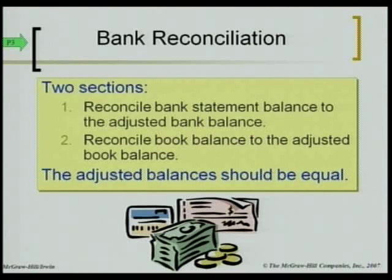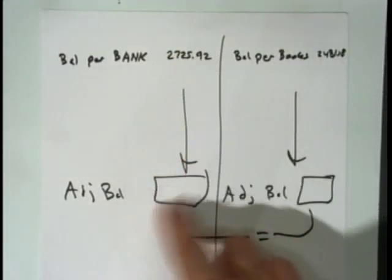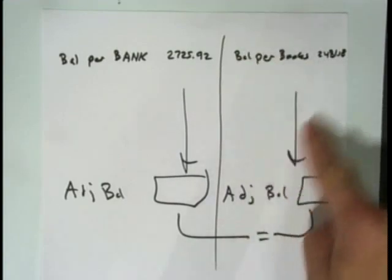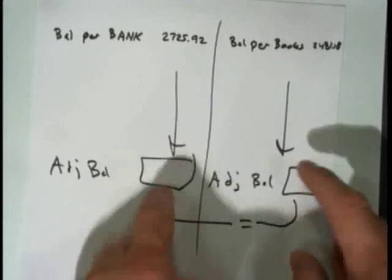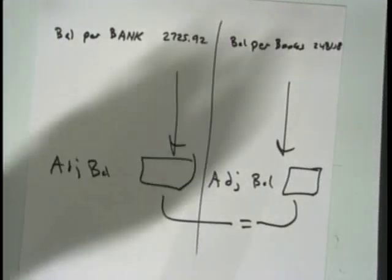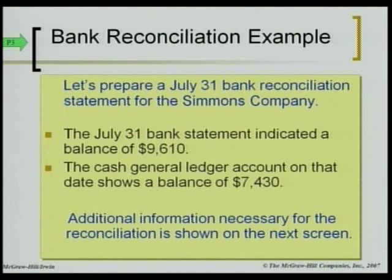Let's look at an example: a July 31 bank reconciliation for Simmons Company. The bank statement shows a balance of $9,610, but the general ledger shows only $7,430. Those are different amounts, so we do a bank reconciliation.